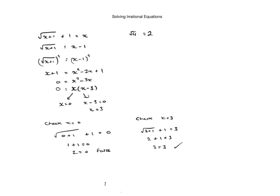The main thing to remember about solving these irrational equations, guys, is that we have to check both of the solutions to see if they work. And the second thing is that square root of 4 is only positive 2. It's not negative 2.